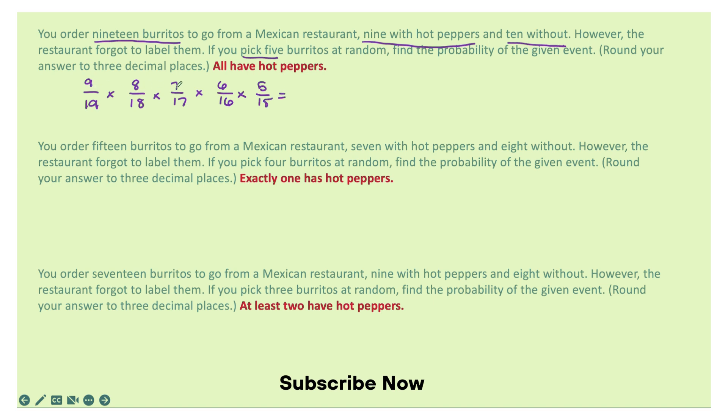I'm going to multiply 9 times 8 times 7 times 6 times 5, and I get 15,120. And then if I multiply 19 times 18 times 17 times 16 times 15, I would get 1,395,360.